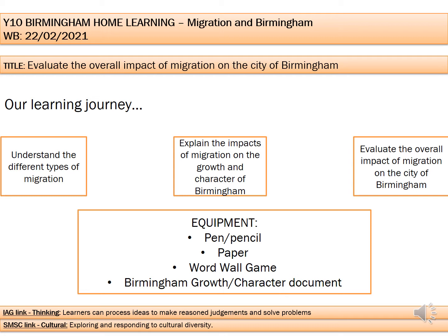First, we need to understand there are lots of different types of migration, and some of them are more applicable to HICs than they are to LICs and NEEs, and vice versa. The second part of our journey today is that we're then going to explain the impacts of migration on the growth and character of Birmingham. We'll talk about what those keywords mean in a bit, and then finally we're going to test our geographical skills to evaluate the overall impact of migration onto the city of Birmingham. The equipment you need is a pen or pencil and some paper, the game linked on class charts, and a document on class charts called Birmingham Growth and Character.